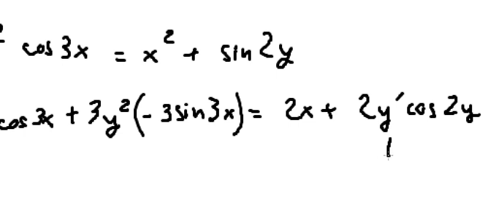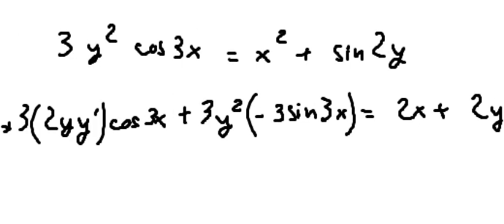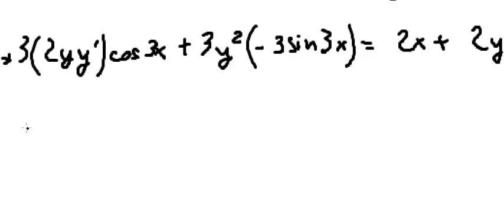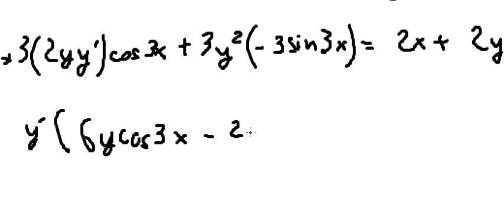Now we have first derivative of y and first derivative of y in here. We can do factorization. You get 6y cosine 3x minus 2 cosine 2y.